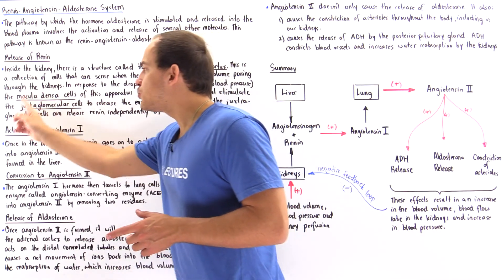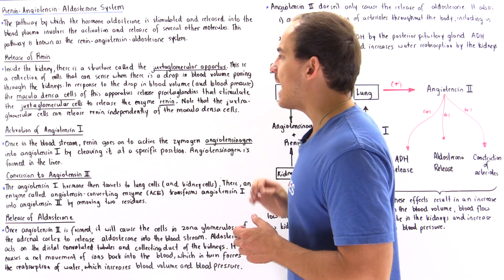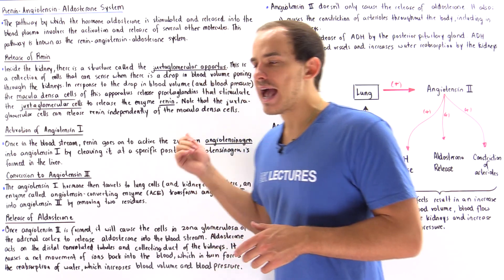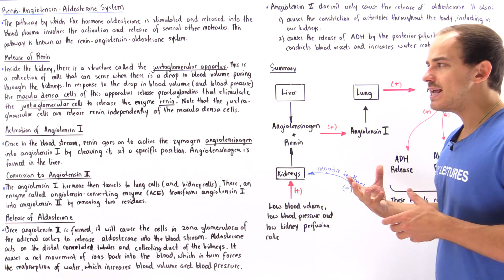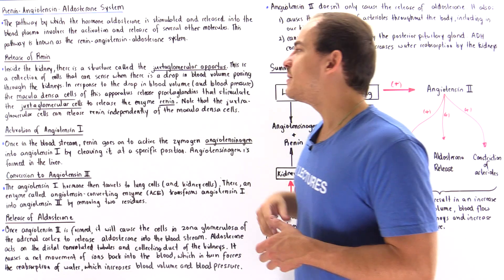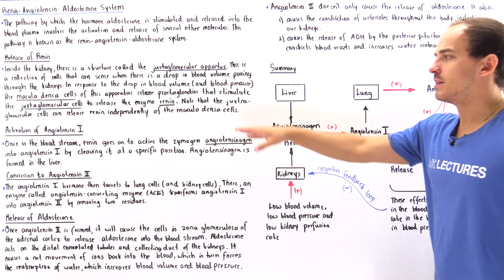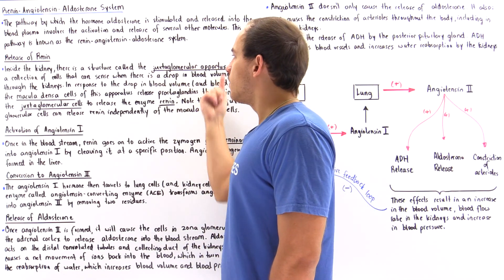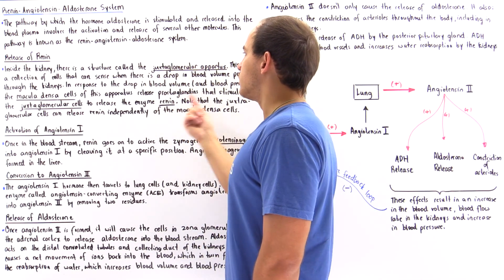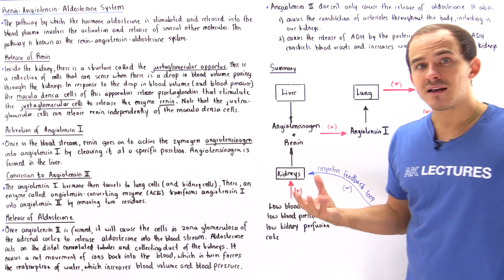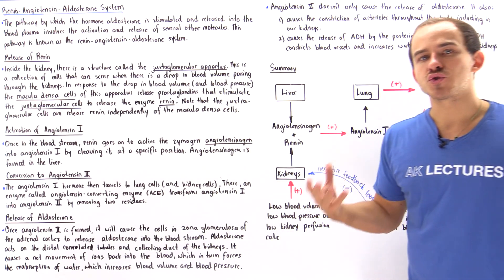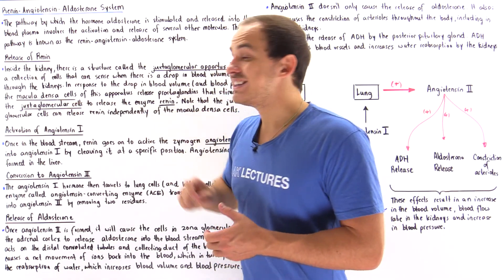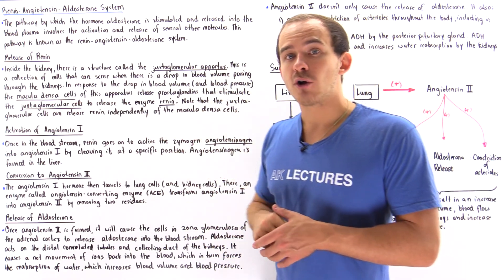Note that juxtaglomerular cells don't have to be activated or stimulated solely by the macula densa cells. The juxtaglomerular apparatus contains special types of cells that can directly sense a drop in blood volume and a drop in blood pressure, and these cells release renin into our bloodstream.